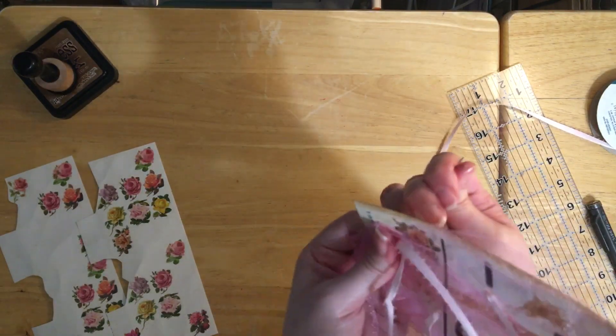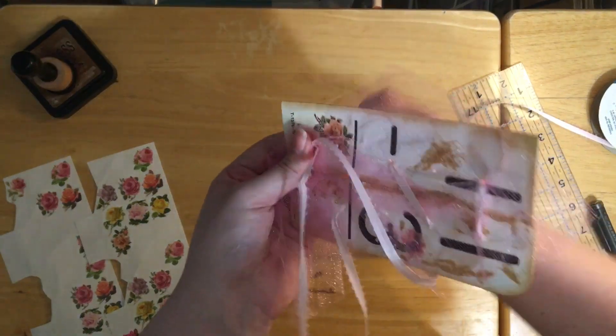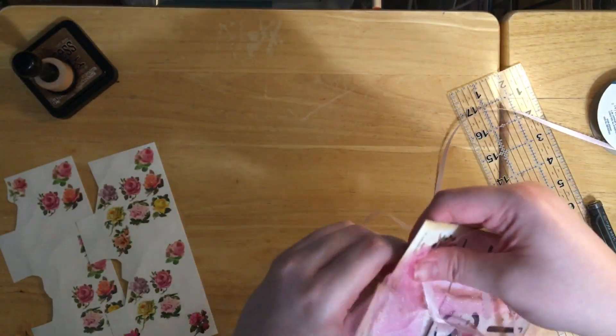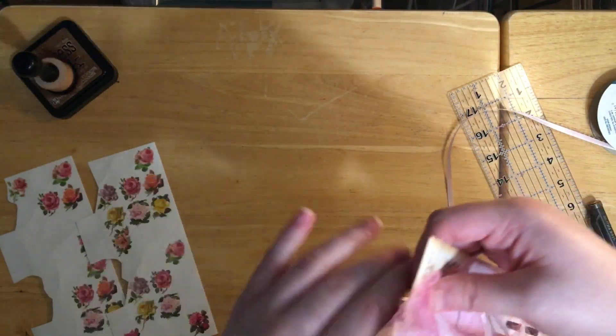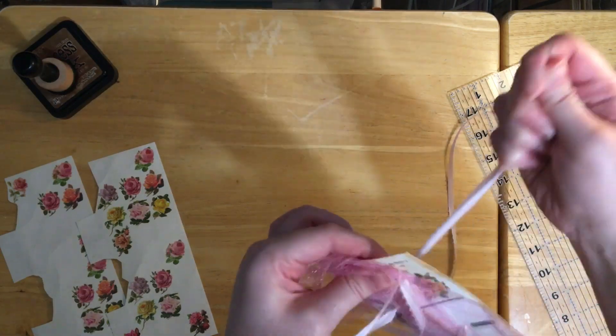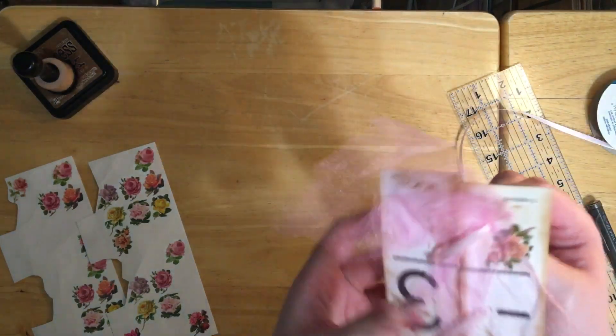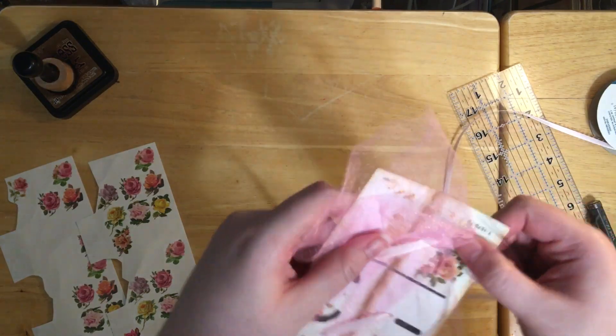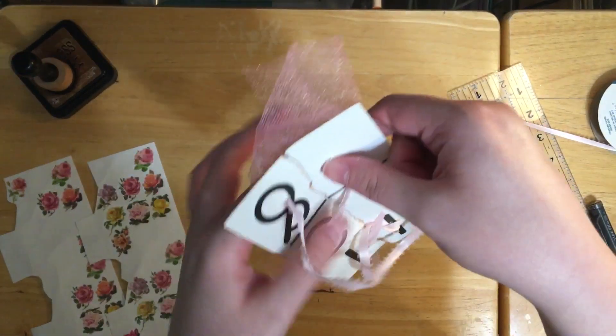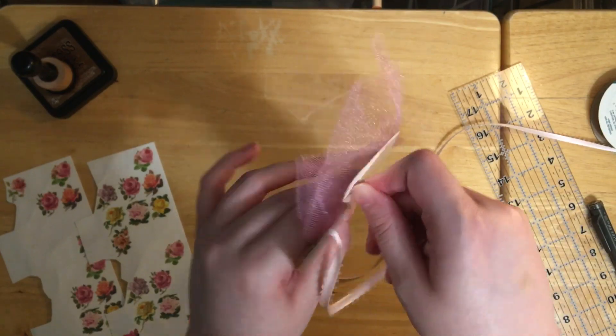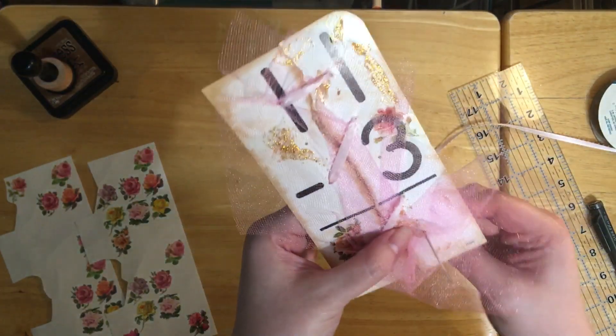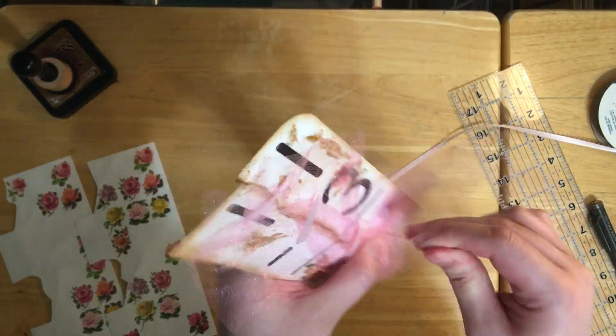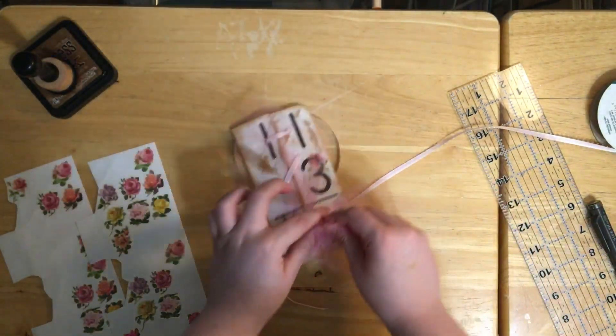My ribbon is getting kind of twisted so I'm gonna try to untwist it. Then I'm gonna cross it back to the bottom one over here. I don't really care how the back of it looks - we're gonna cover that up.